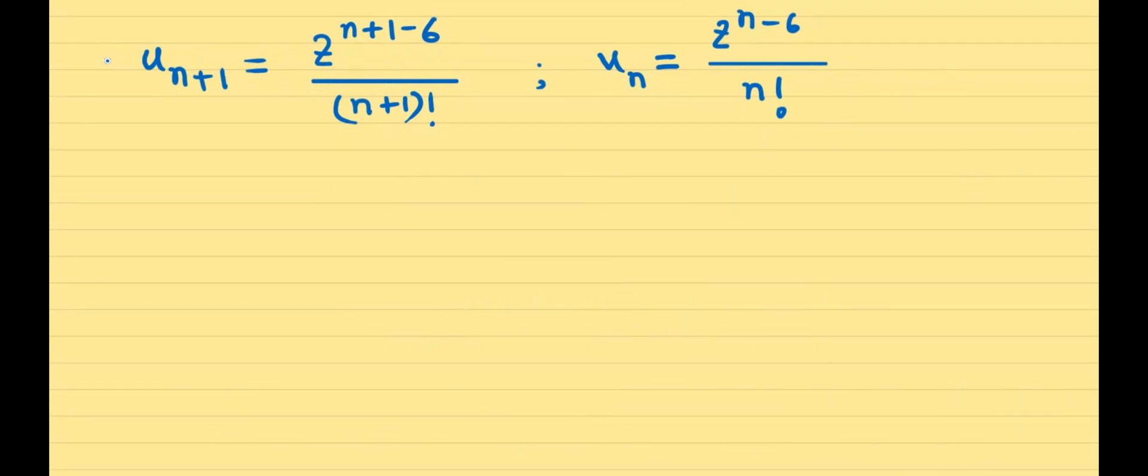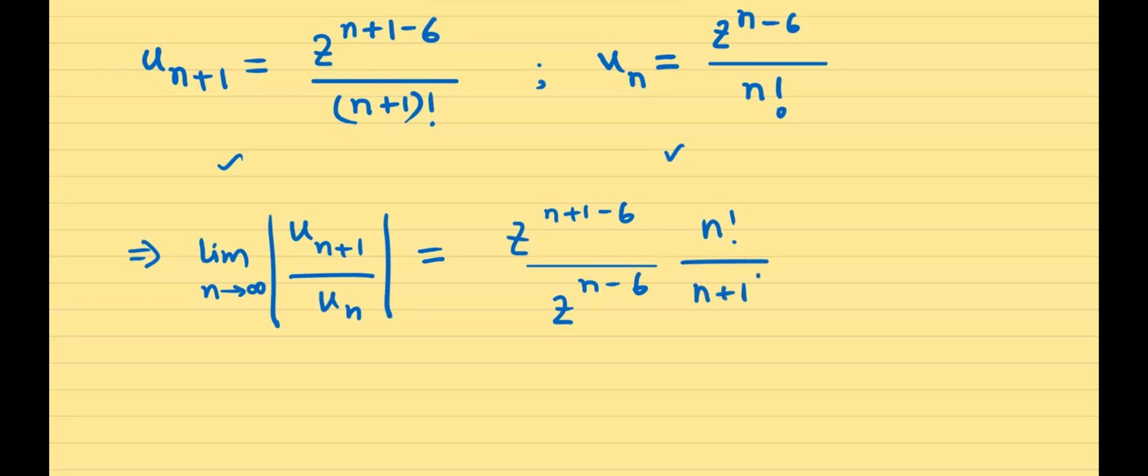We find that u sub n plus 1, which is the n plus 1 term, is given by this formula right here, and the nth term, u sub n, is given by this formula. So we have u sub n plus 1 divided by u sub n, and then we take the modulus and set the limit n tends to infinity. This gives us z to the power n plus 1 minus 6 divided by z to the power n minus 6, and then we have n factorial divided by n plus 1 factorial.